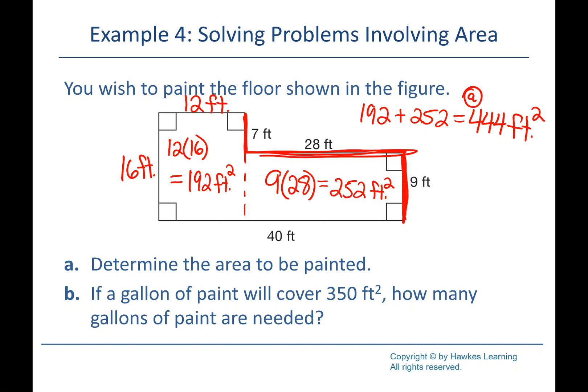Part B: if a gallon of paint covers 350 square feet, how many gallons are needed? 444 ÷ 350 ≈ 1.26 gallons. Being practical, you can't buy 0.26 gallons — you'd have to buy 2 gallons and have some left over. So the answer is 2 gallons.